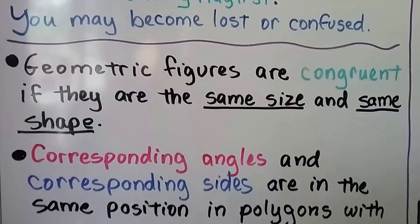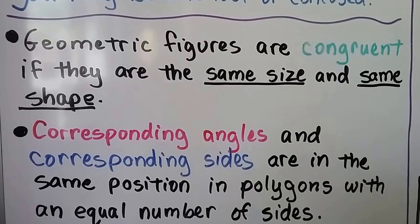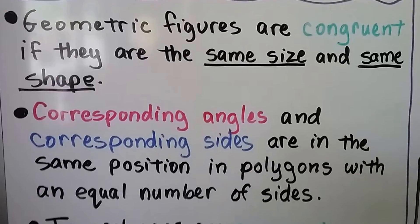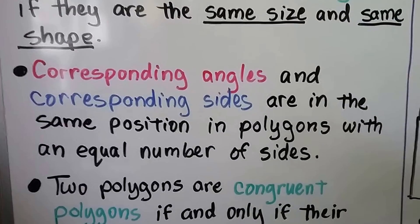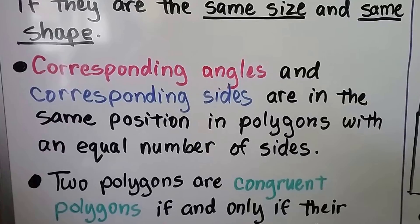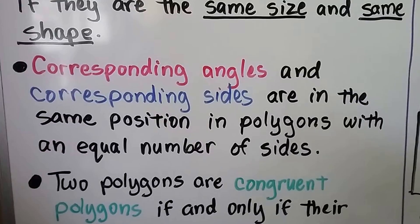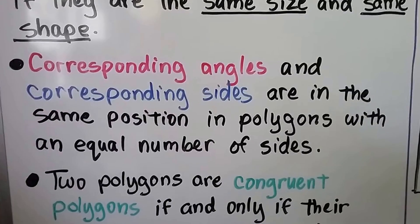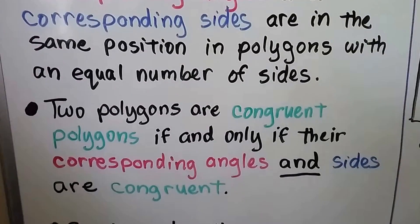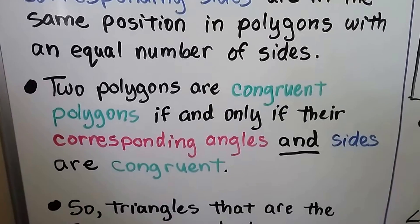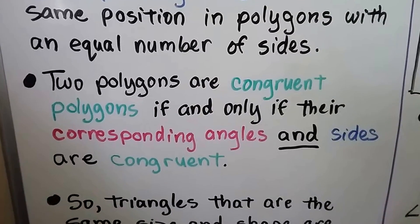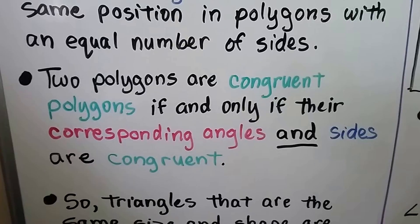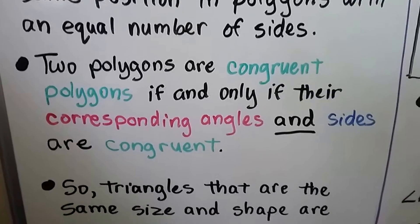Geometric figures are congruent if they are the same size and same shape. Corresponding angles and corresponding sides are in the same position in polygons with an equal number of sides. Two polygons are congruent polygons if and only if their corresponding angles and sides are congruent.